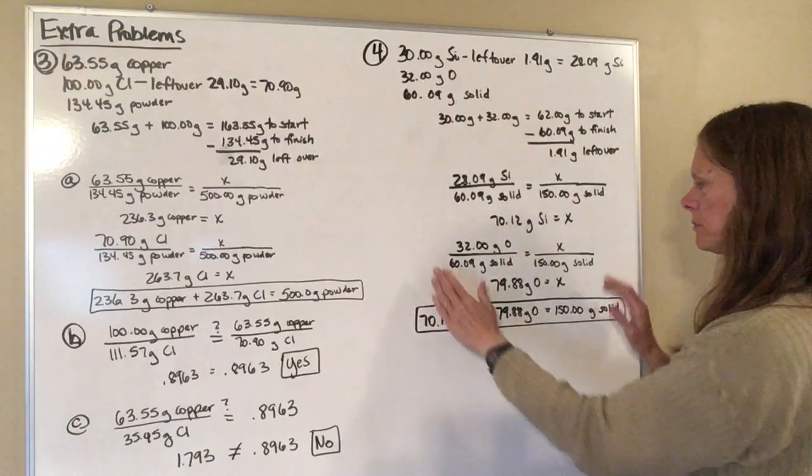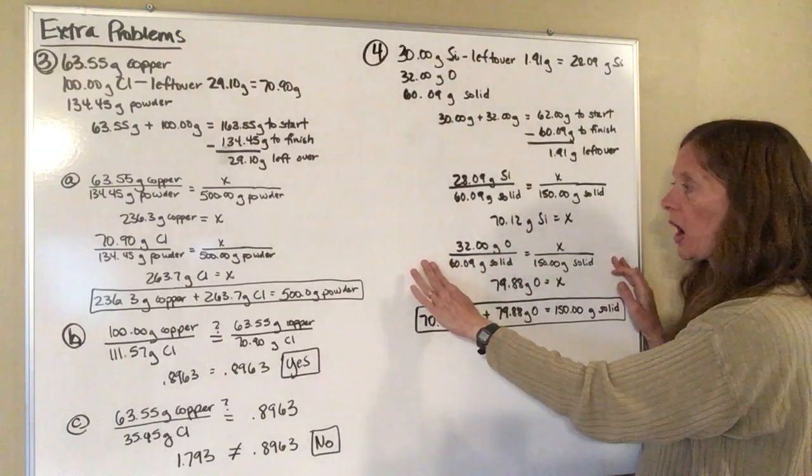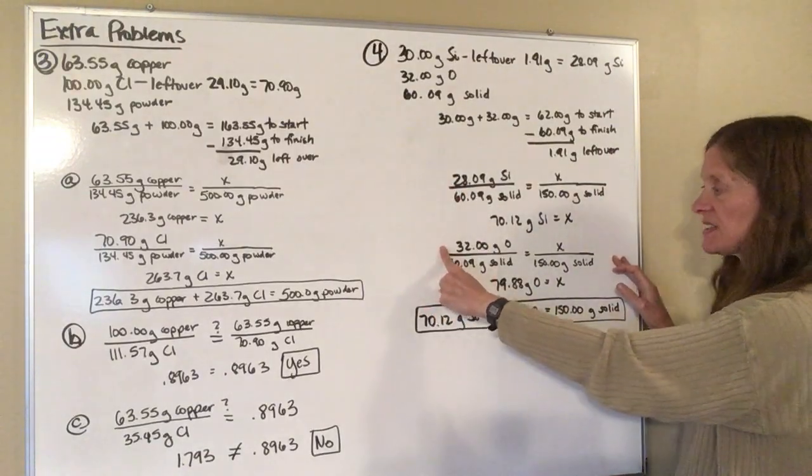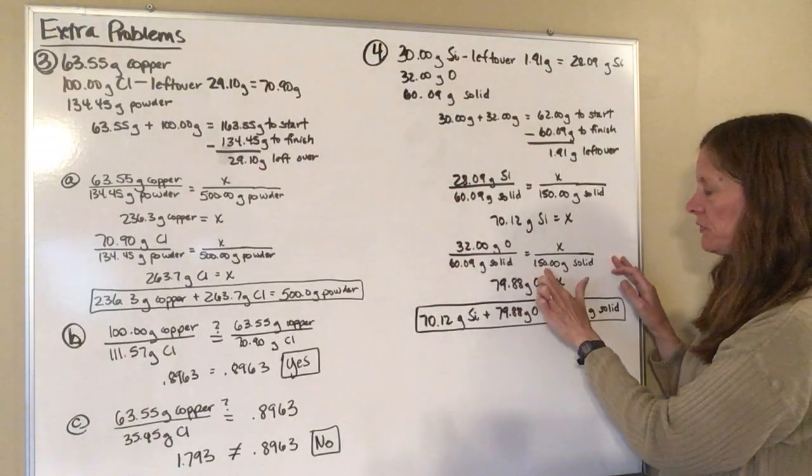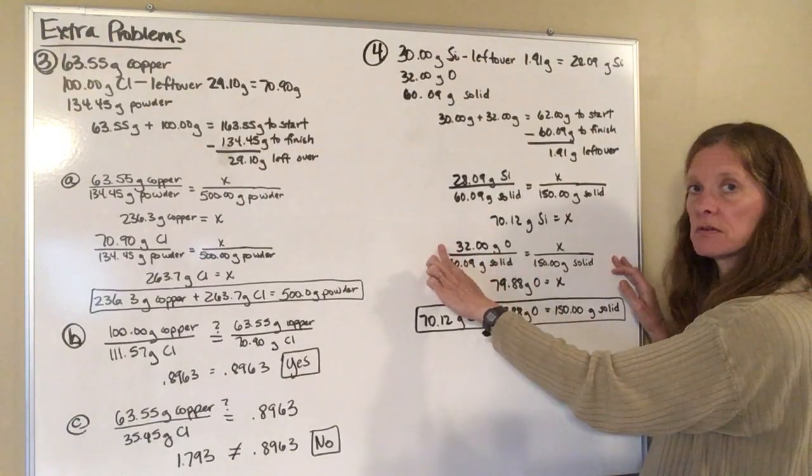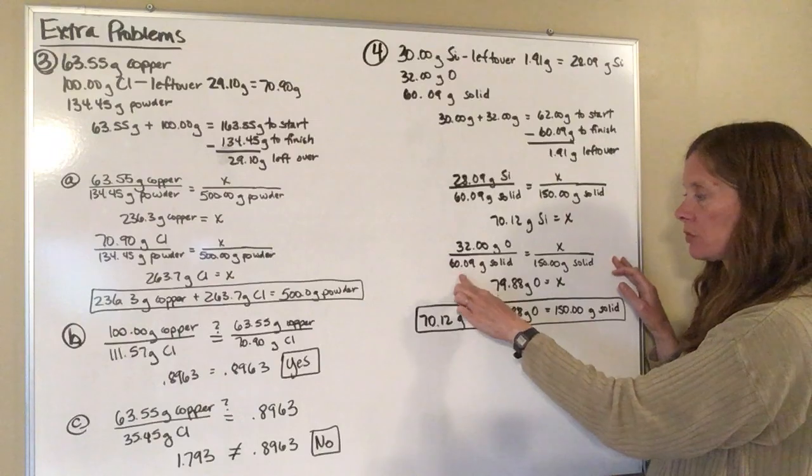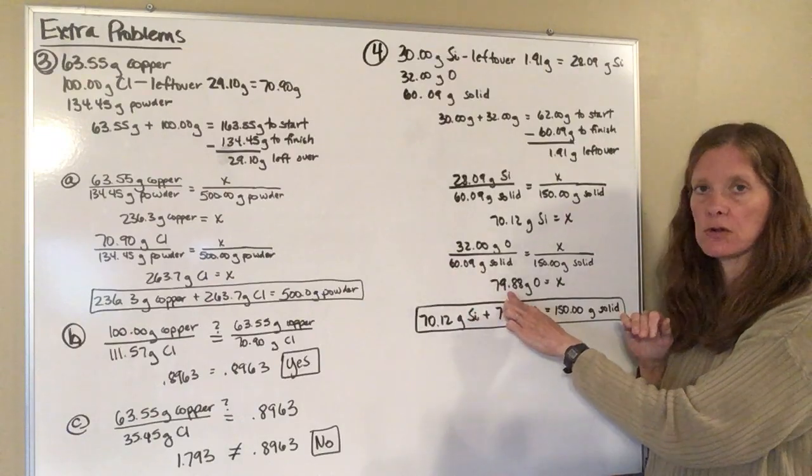Very similar proportion for oxygen. I'm going to take out the silicon, plug the oxygen in here instead. So I'm going to have 150 grams of solid times 32 grams divided by 60.09. And that will come up with 79.88 grams of oxygen.